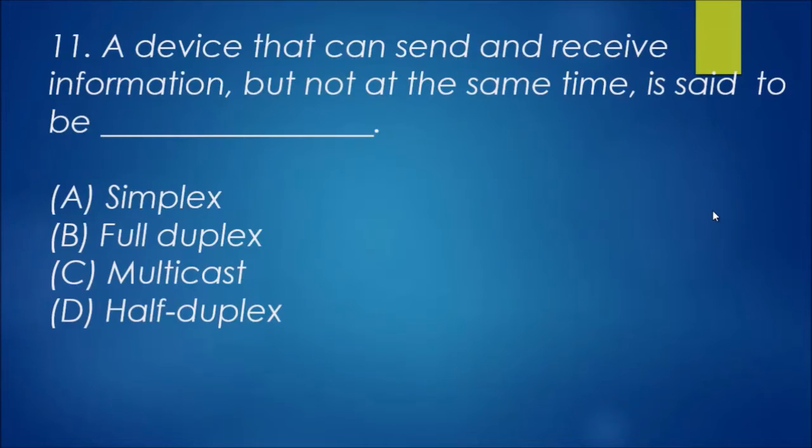Question 11: a device that can send and receive information but not at the same time is said to be simplex, full duplex, multicast, or half duplex? I know full duplex means devices can receive and send information at the exact same time. If we do that in half, we get half duplex. Multicast is not involved and simplex, no. That's D, half duplex.